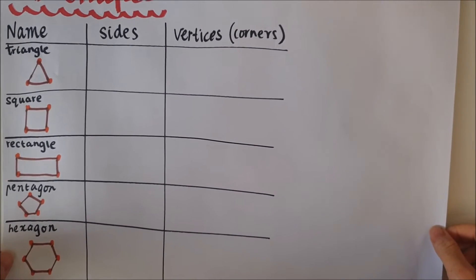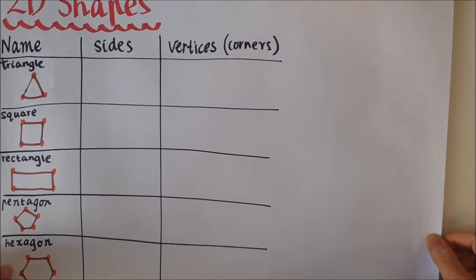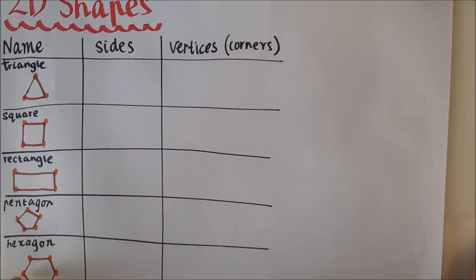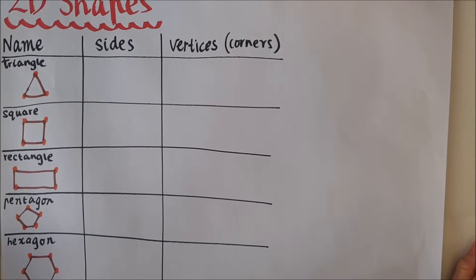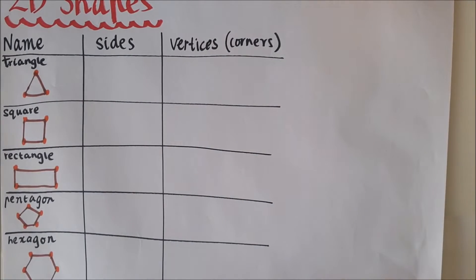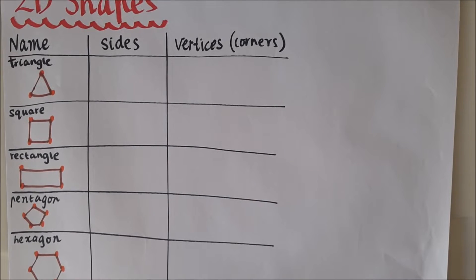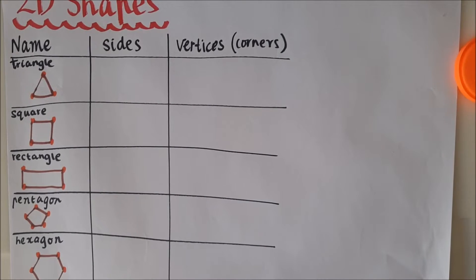So here I've got a chart that I've drawn up of my 2D shapes. I've got triangle, square, rectangle, pentagon and hexagon. Now there are plenty of other shapes that you can also add to the list and tell us the features.